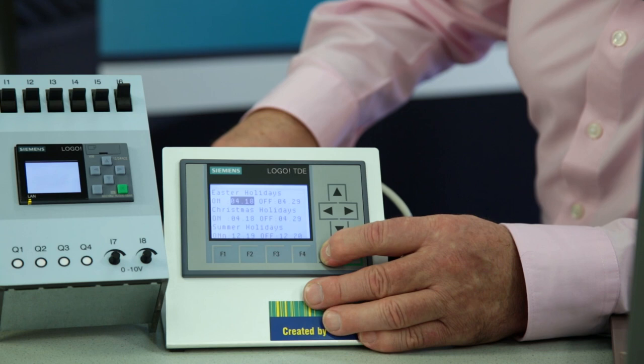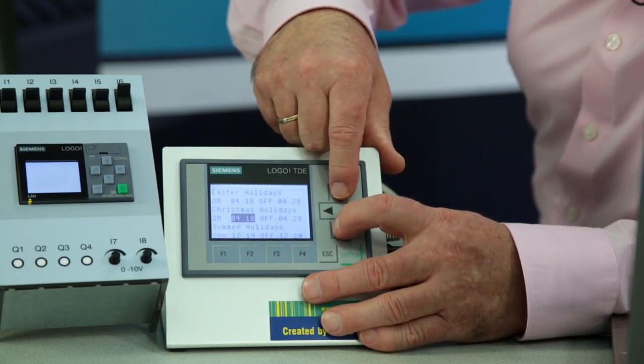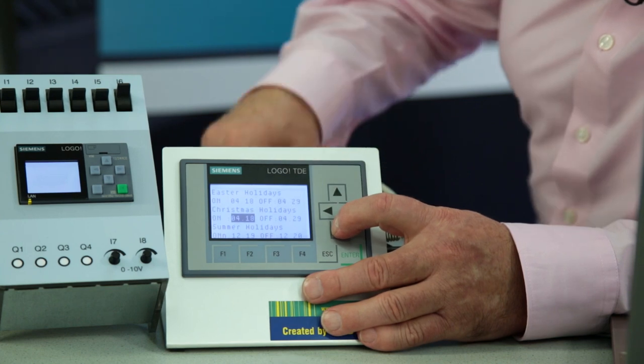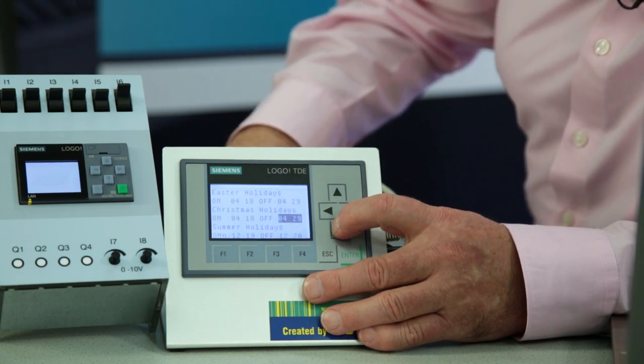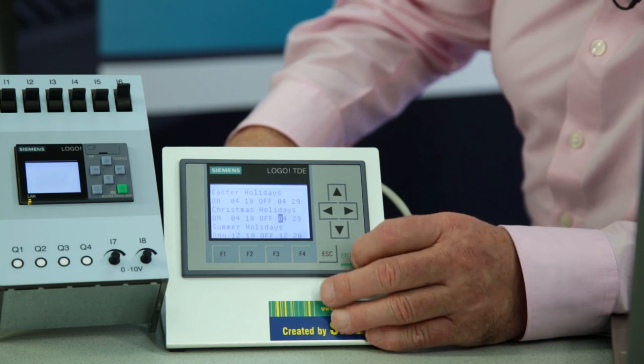The cursor UP and CURSOR DOWN keys enable me to select the parameter that I wish to change, and by hitting the ENTER key I then confirm that I wish to change this parameter.